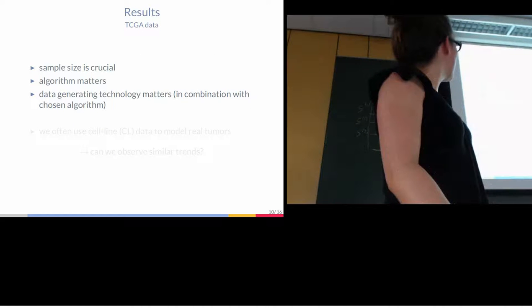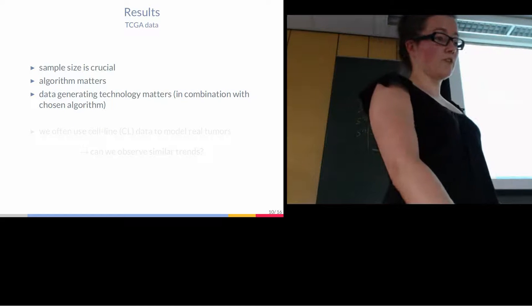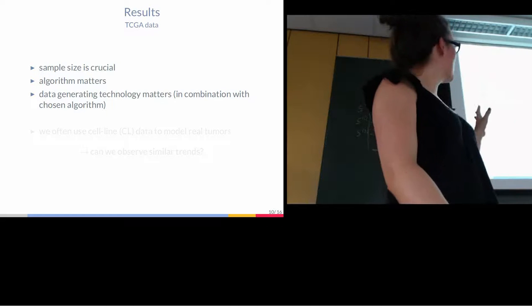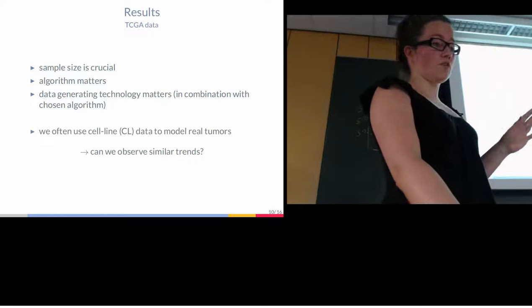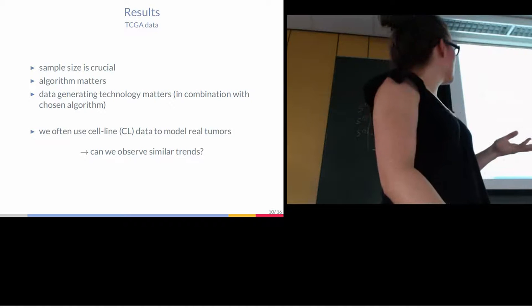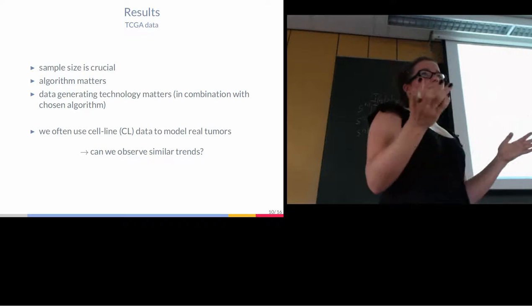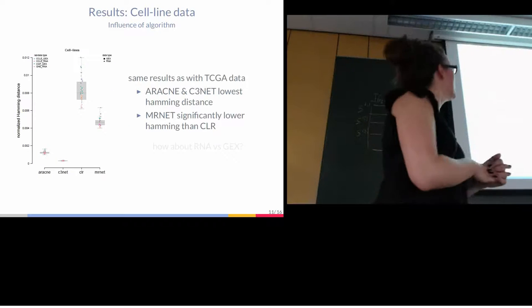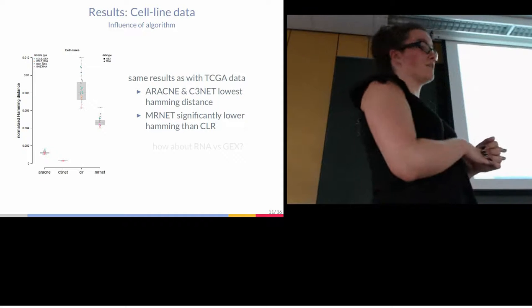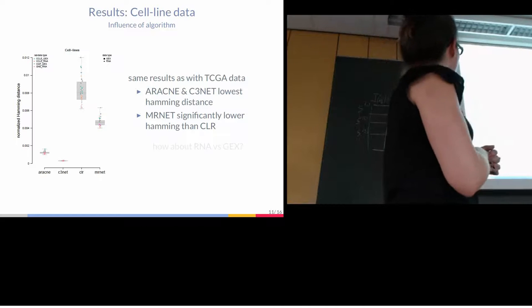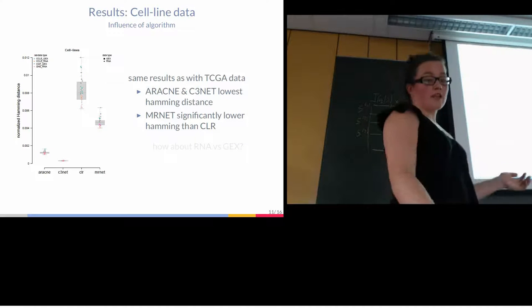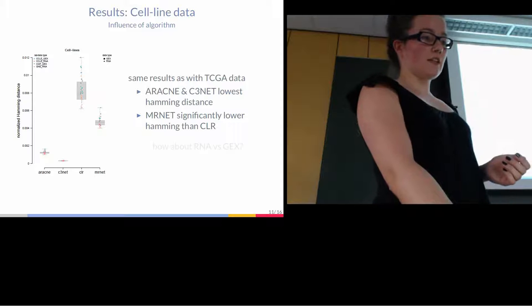So the results on the TCGA data: the sample size is very important, the algorithm is important, and the data technology matters. But here we've seen it depends also on the algorithm you chose to use. So now what we asked ourselves is we often use cell line data to model these tumors. Do we actually get similar trends?